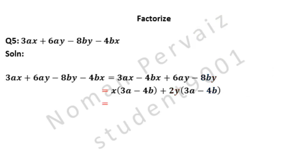Equals to: Here, 3a minus 4b is common in both terms. So, 3a minus 4b is taken as common. x plus 2y is written within brackets. Hence this is our answer.